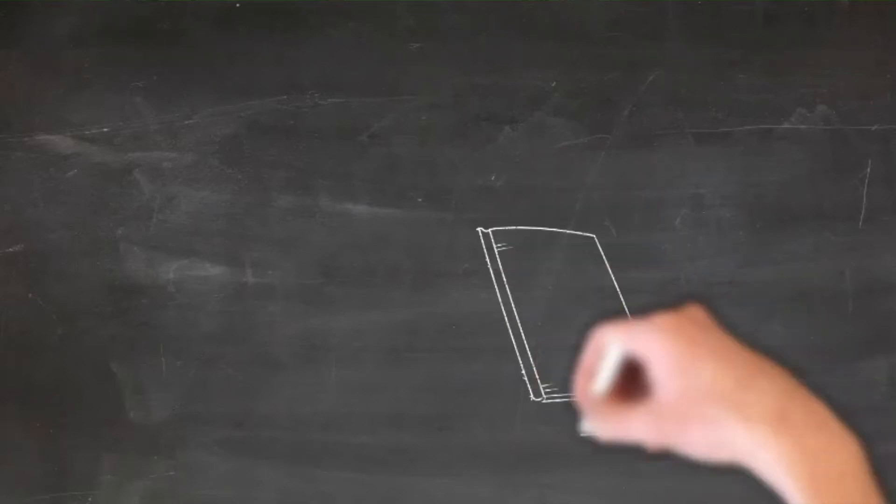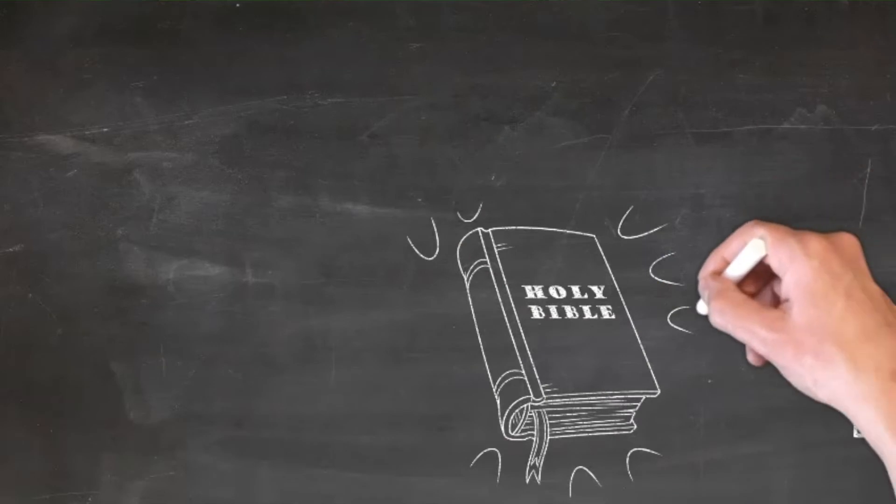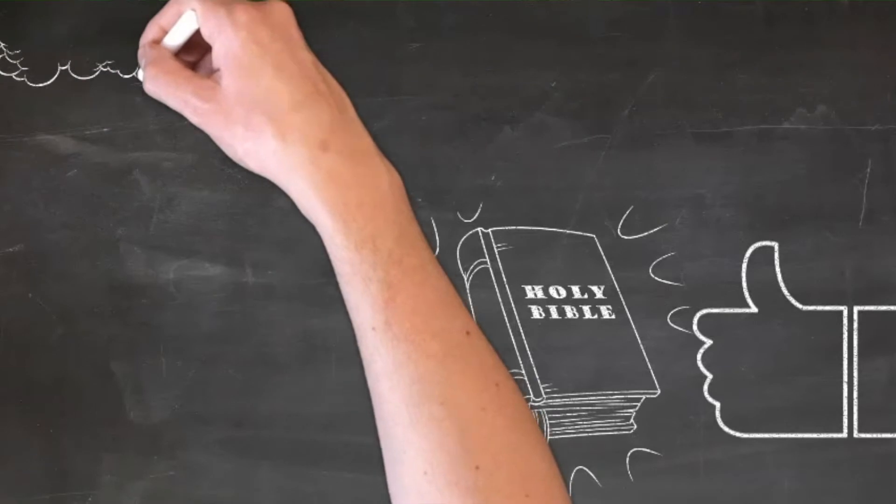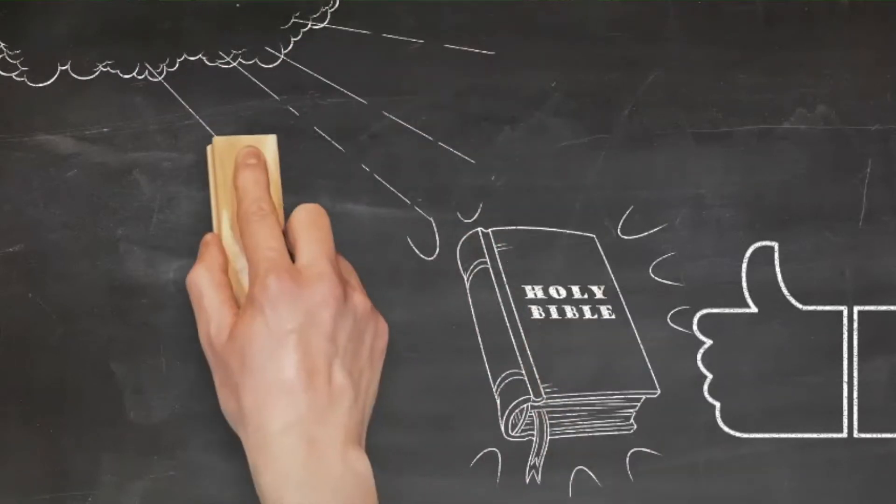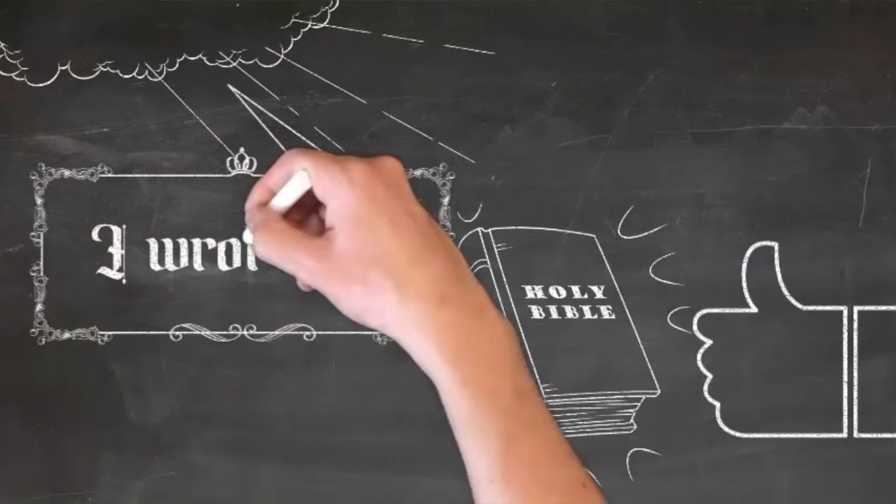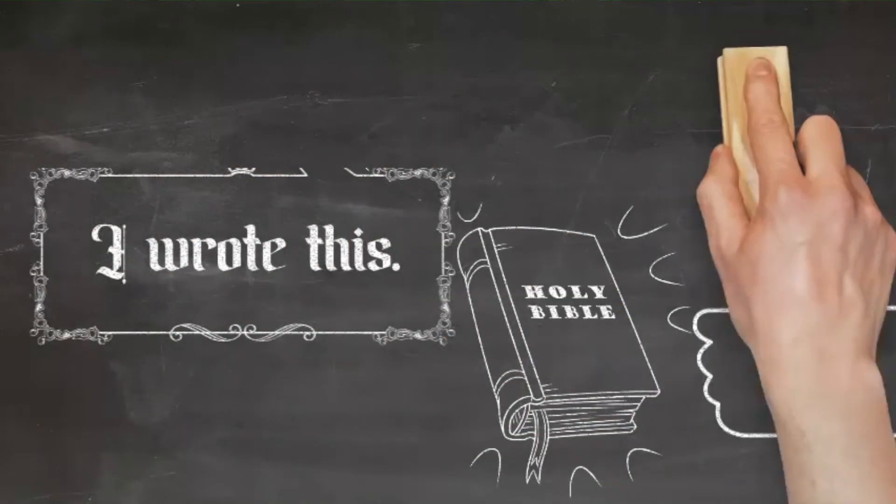So what does all of that mean? All of this, the canon, the variance, all of that stuff means that the Bible we have is reliable, trustworthy, and good. You can trust the Bible. For 2,000 years, the Church has affirmed that these books are God's Word. We recognize that God has spoken through His prophets and apostles and that those words are written down for us in a book that is good and true.